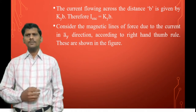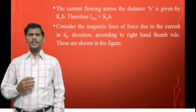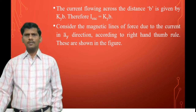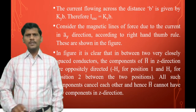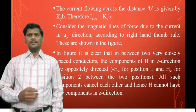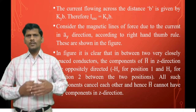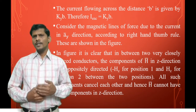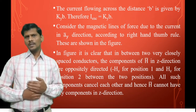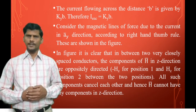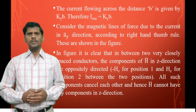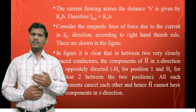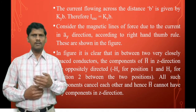Consider the magnetic lines of force due to the current in the āy direction according to the right-hand thumb rule. The current is flowing in the y-direction, so along that direction there is no magnetic field intensity. The magnetic field intensity can exist either in the x-direction or z-direction.